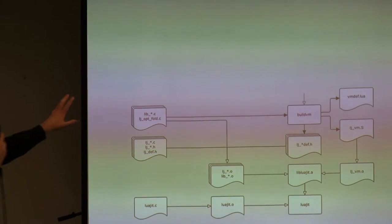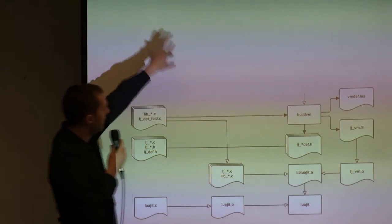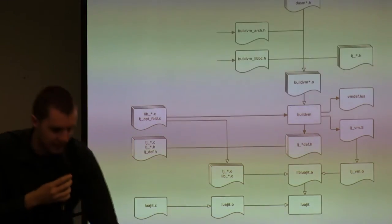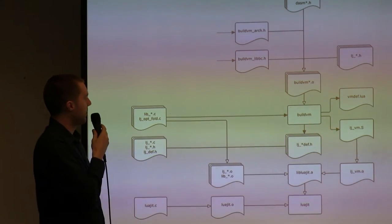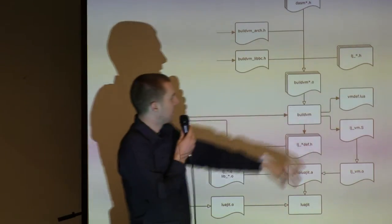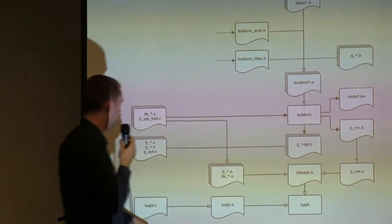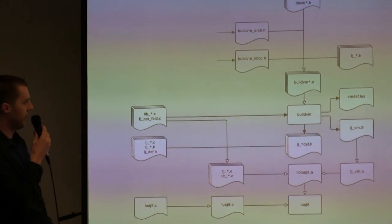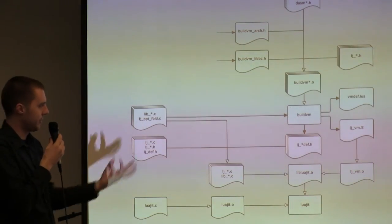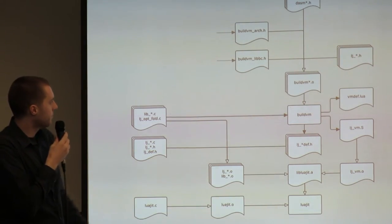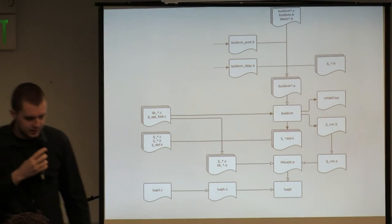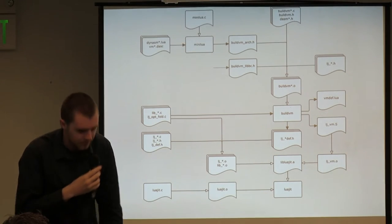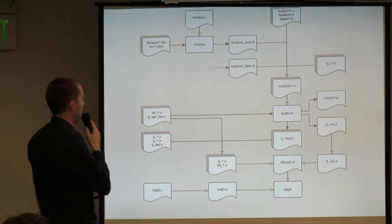Looking at BuildVM itself — it's compiled from some files. There are the normal LuaJET headers also used in the main build. There are also two interesting headers worth pointing out. The first comes from a little pipeline involving a program called MiniLua, and MiniLua.c is a copy of the entire Lua 5.1 codebase compressed into one file, with some bits and whitespace removed. It contains just what the build system needs.